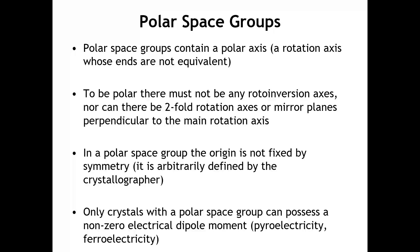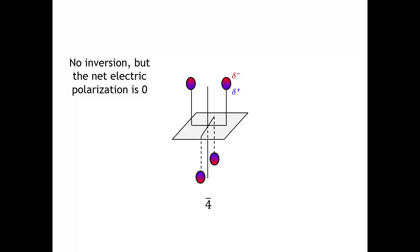Only crystals that fall into this polar group can exhibit pyroelectricity and ferroelectricity. To illustrate this, consider a collection of four polar molecules — think of HCl with a positive and negative end. If we apply all the symmetry operations of a four-fold roto-inversion axis, we generate the other molecules in their orientations. Although there are no inversions in this image, the dipole moments of the four molecules cancel out when added up. This shows how you can have a non-centrosymmetric crystal that is nonetheless not a polar crystal.